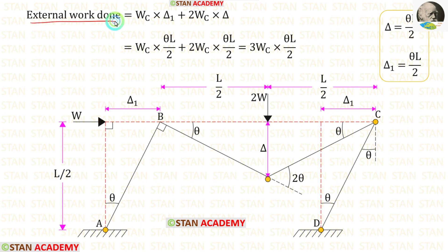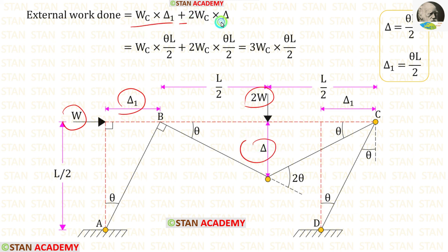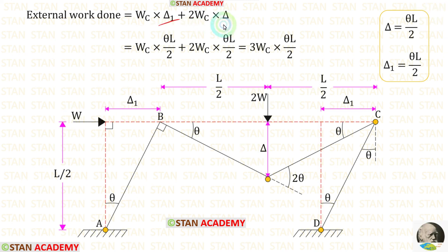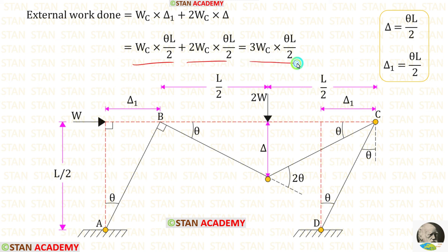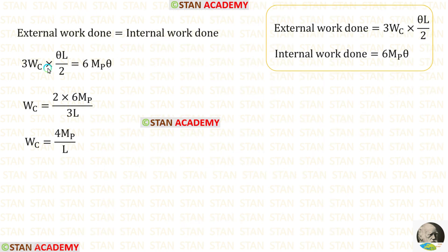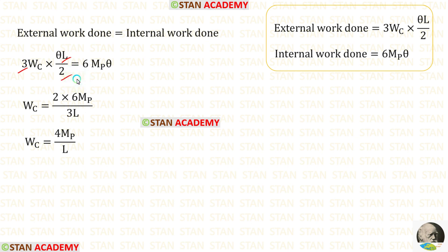Now let us find the external work done. We multiply load W by displacement delta 1, then add 2W multiplied by displacement delta. Substituting delta 1 and delta as theta L upon 2, after adding we get 3 Wc times theta L upon 2. Equating with 6 MB theta and eliminating theta, taking 3 and L/2 to the other side — 2 times 6 divided by 3 gives 4 — so the collapse load Wc equals 4 MB upon L.